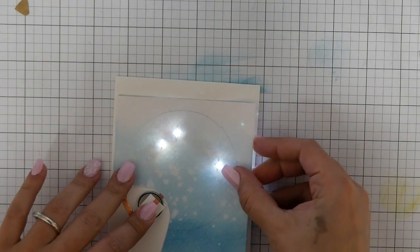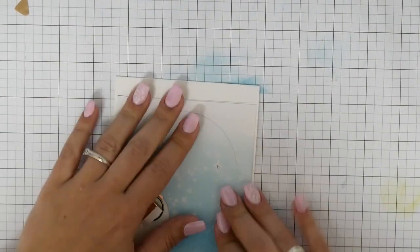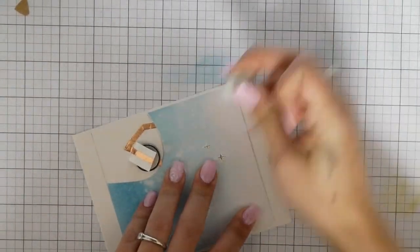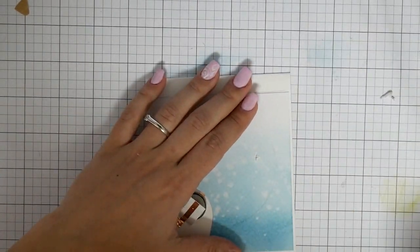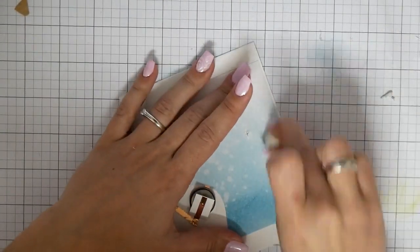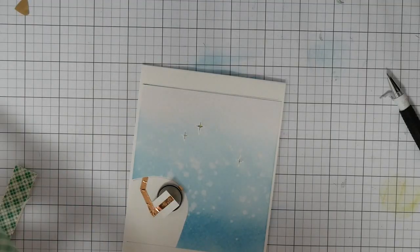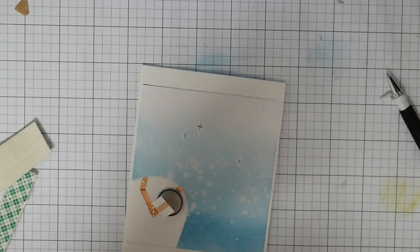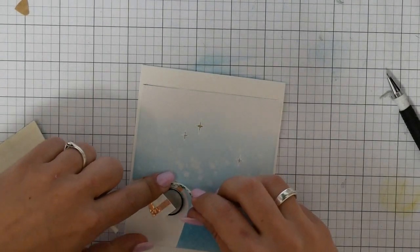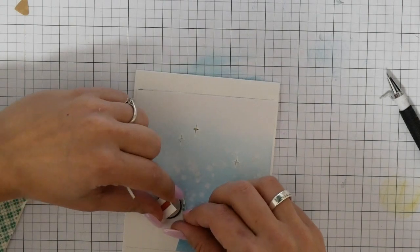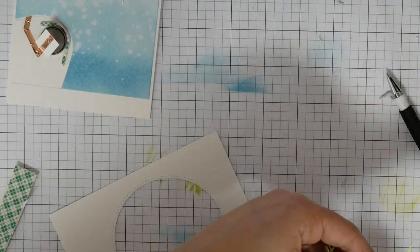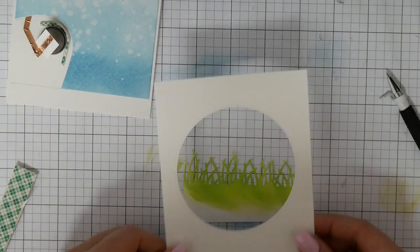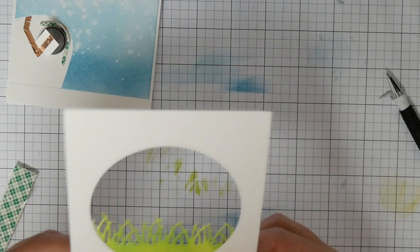I'm taping the background down now. I'm using here some dry tape because I like this much more than liquid glue. I'm erasing now my circle part I drew in to know where to go with my shining pieces. Now I'm creating like a little pocket or little house for my battery.